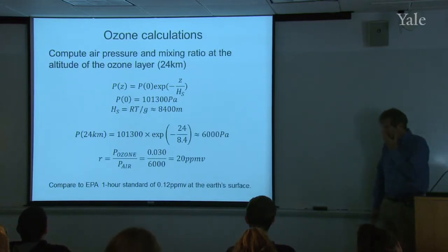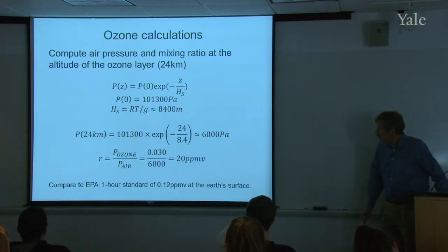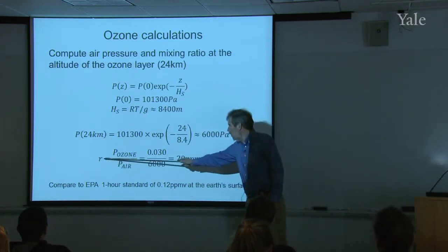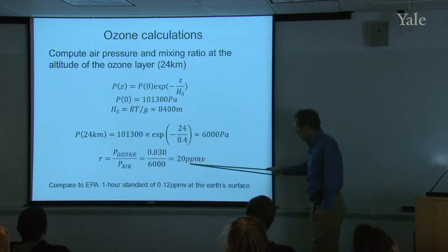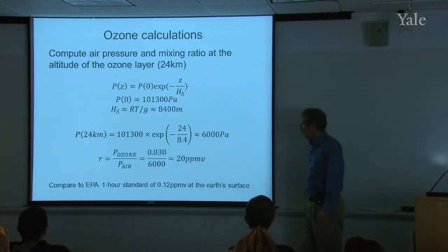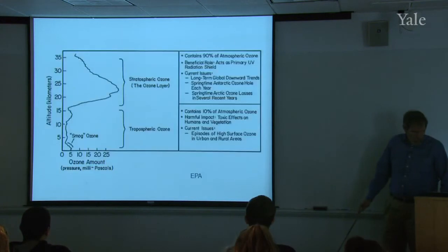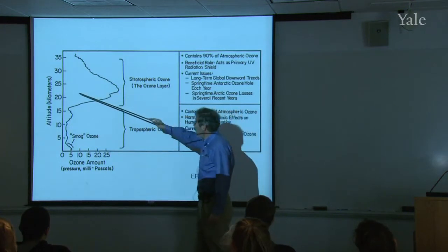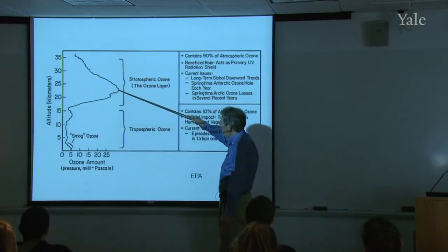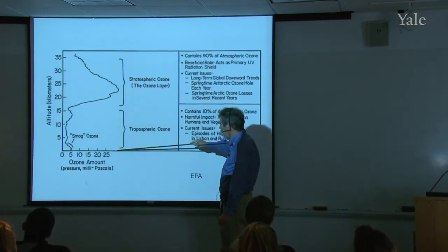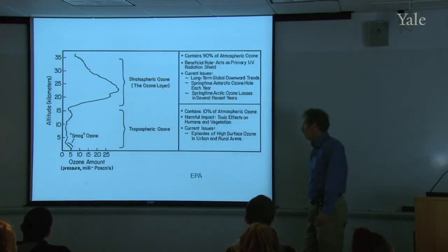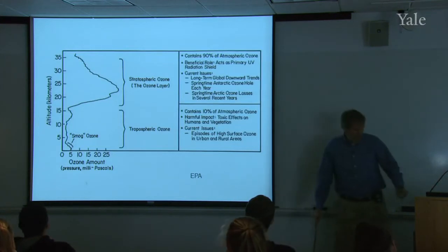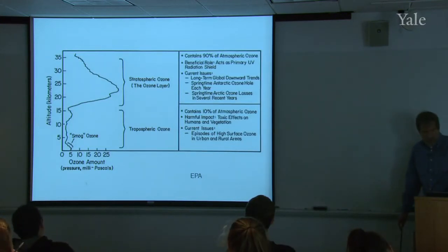Just a couple of calculations. I want to compute the mixing ratio in ppmv for ozone to air using a point on this slide. At about 24 kilometers altitude, you've got a partial pressure of ozone of about 30 millipascals, and I want to convert that to a mixing ratio, because that's what we've been using.